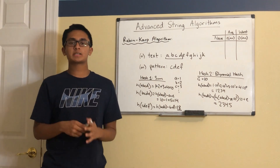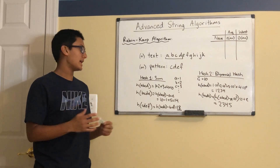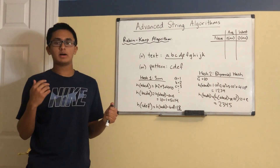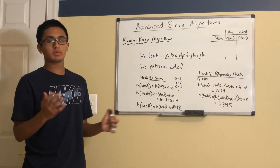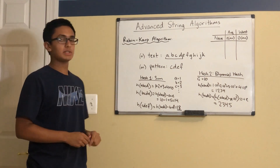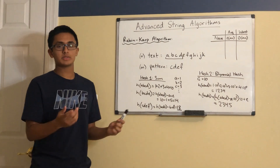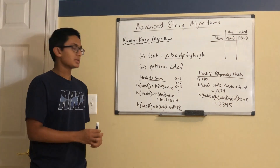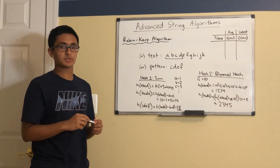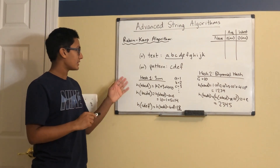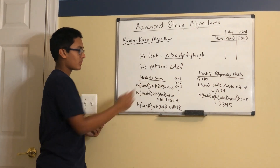Let's take a closer look at some rolling hash methods. Consider the most simple hash method: summing the encoding value for each character. Typically your computer would use ASCII values, but for simplicity we'll use the order of the alphabet — a is 1, b is 2, c is 3, and so on. If your hash function is the sum of the values of all characters in a string, then for the first sliding window A, B, C, D, your value would be 1 + 2 + 3 + 4 = 10.